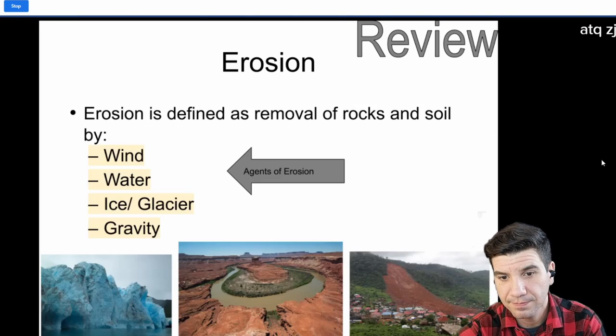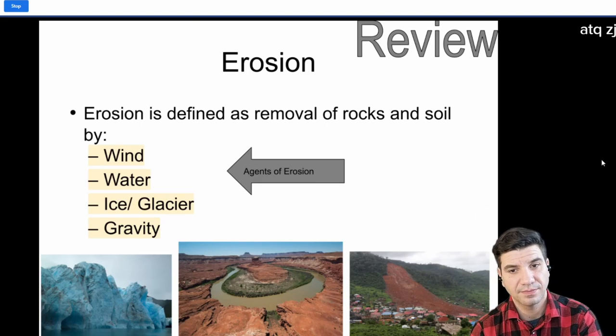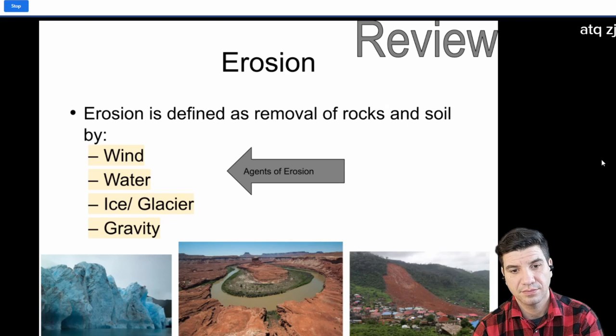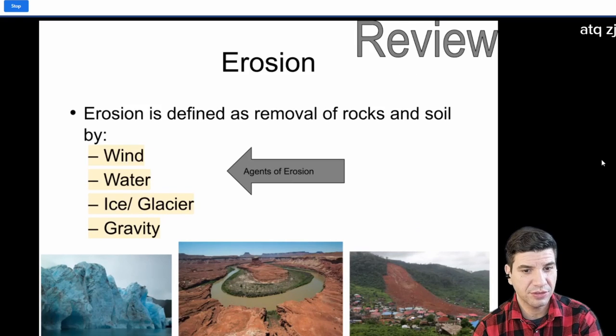Compared to erosion, erosion is actually when those broken down pieces are being taken away or moved away by either wind, water, ice, or glacier, or even gravity. These are called agents of erosion. So, weathering makes a mess. Erosion cleans it up.